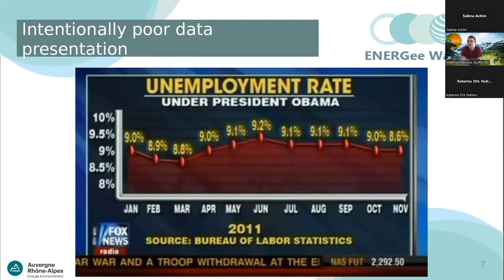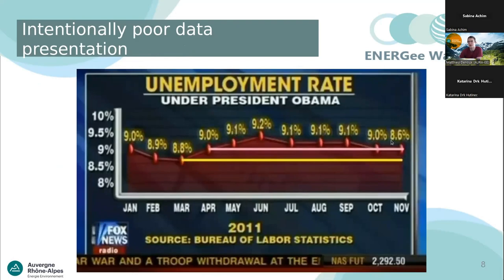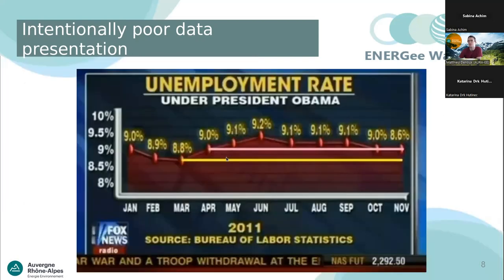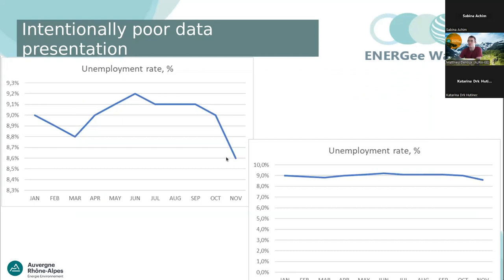I took a graph from a Fox News TV show about ten years ago showing the unemployment rate. If you look at this curve, you can see obvious issues: the value 8.6 is plotted at the same level as 9.0, and 8.8 appears below 8.6 — both incorrect relative to the y-axis. The real curve looks quite different. Choosing a different scale can also crush the curve, making it look very flat, while a smaller scale shows the evolution more precisely.